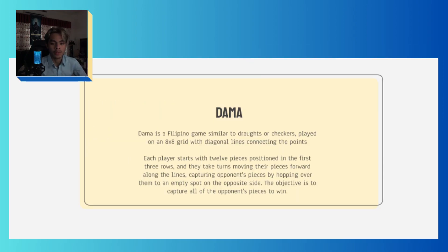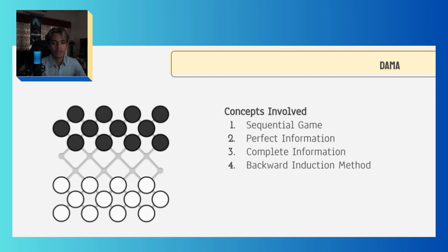Dama is a Filipino game similar to draughts or checkers, played on an 8x8 grid with diagonal lines connecting the points. Each player starts with 12 pieces positioned in the first three rows, and they take turns moving their pieces forward along the lines, capturing opponents' pieces by hopping over them to an empty spot. The objective is to capture all the opponent's pieces to win. The concepts involved in Dama are: 1. Sequential game, 2. Perfect information, 3. Complete information, and 4. Backward induction method.